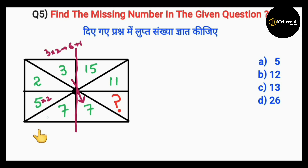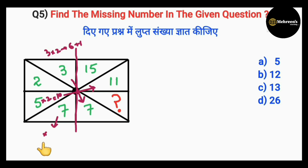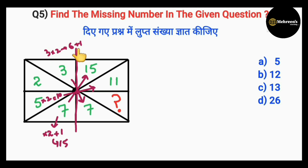5 into 2 is 10, plus 1 gives 11, which is the opposite number here. Then 7 into 2 is 14, plus 1 gives 15, which is the opposite of 7 here. Pattern cracked: multiply by 2, then plus 1, gives the opposite number. So the missing number, which is opposite to 2, is found by: 2 into 2 is 4, plus 1 gives 5.